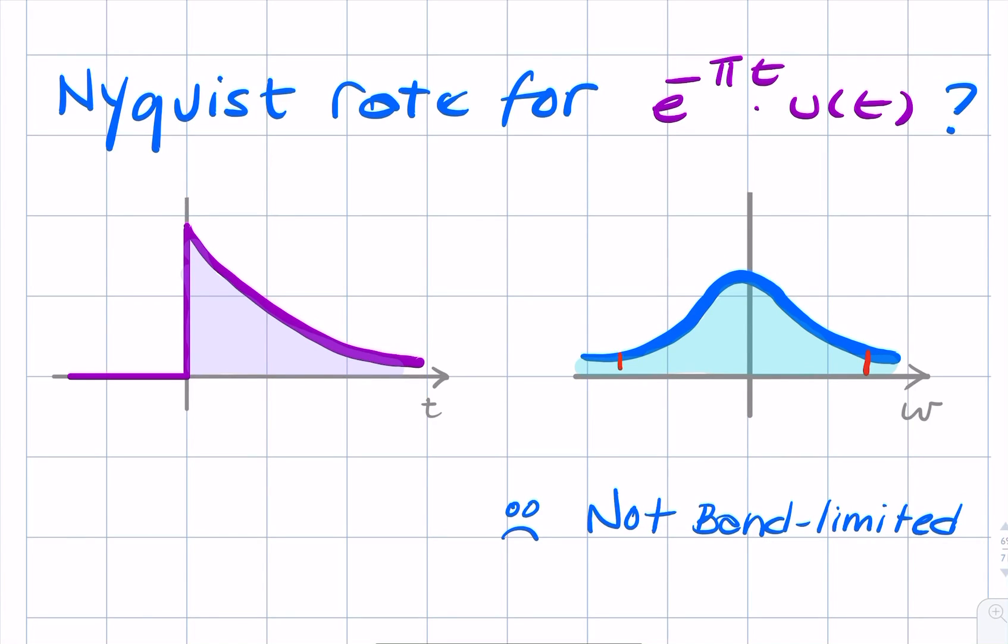Even though it's not band-limited, as long as 99% of the energy can lie between two frequencies, plus and minus uppercase omega, then we can use that estimate, or we can use that value for omega as an estimate for the bandwidth.